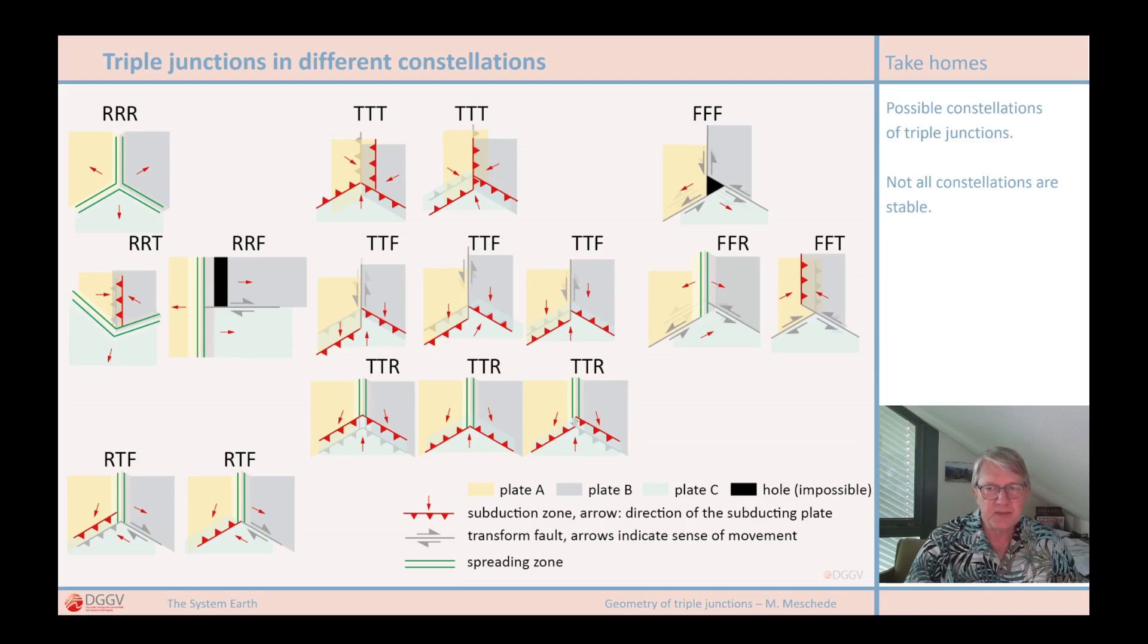Of course, there do not develop such holes, because such triple junction constellations are not possible. If, for example, three transform faults, such as the one at the top right, meet at a point, the triple junction would immediately be transformed in such a way that a stable situation arises.